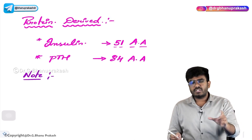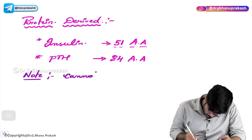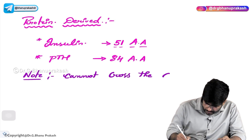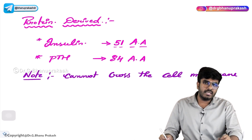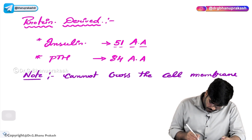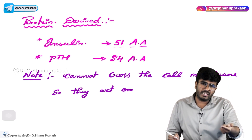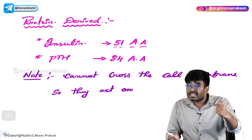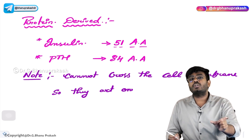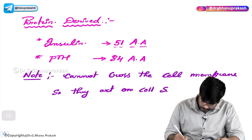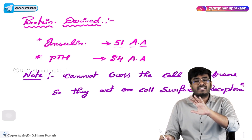An important point for your exam: these proteins are bigger structures, not small single structures. So these protein hormones cannot cross the cell membrane. They cannot cross the lipid barrier, the lipid membrane. Therefore, they act on cell surface receptors — they can only act on cell surface receptors and cannot enter into the cell. This is a very important point: protein hormones can never cross the cell membrane.